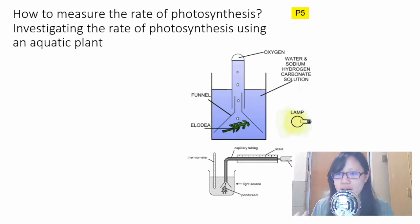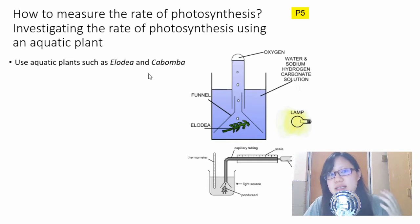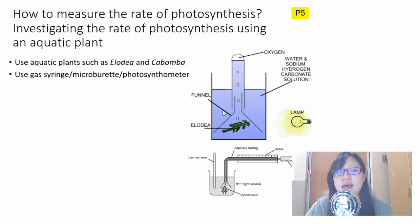This is the whole plant, and we'll use an aquatic plant such as Elodea and Cabomba. Why use aquatic plants instead of land plants? Because it's easier to measure the product, which is oxygen. This setup can be called many names: gas syringe, microburette, or photosynthometer. This here is a simplified version using an inverted test tube, but it's a problem because it's not graduated, so you don't know the exact volume of oxygen. I'll stop being a stand-up comedian and move on.